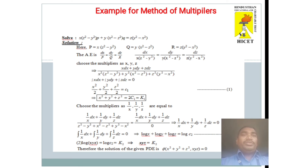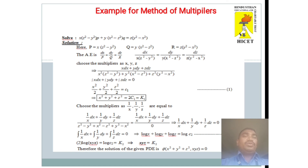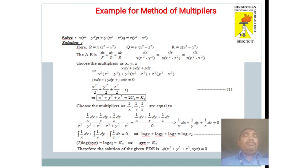Similarly, we find another solution by choosing multipliers 1/x, 1/y, 1/z, giving (1/x)dx + (1/y)dy + (1/z)dz = 0. Integrating, since ∫(1/x)dx = log x, we get log x + log y + log z = log c, which simplifies using log(ab) = log a + log b to log(xyz) = log c. Cancelling logarithms gives xyz = constant. Hence, the general solution of the given partial differential equation is φ(x² + y² + z², xyz) = 0.